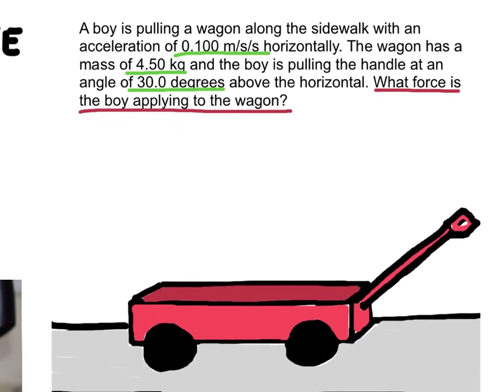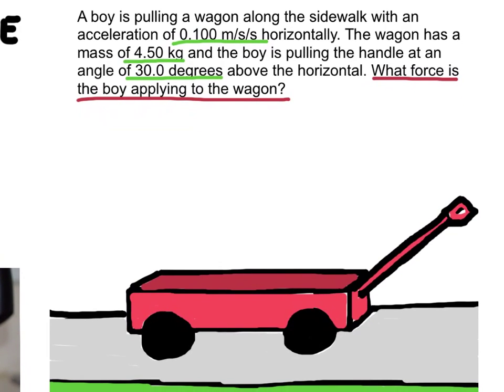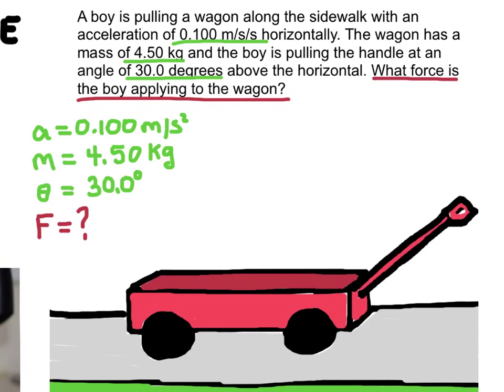Before we go any further, let's just write down what we know about this situation. I've underlined the things we know in green, and then I've also underlined the thing we want to know in red. So here's all the information I know. And I'm even going to label the direction of the force that the boy is applying. So he's applying it along this handle at an angle of 30 degrees above the horizontal.